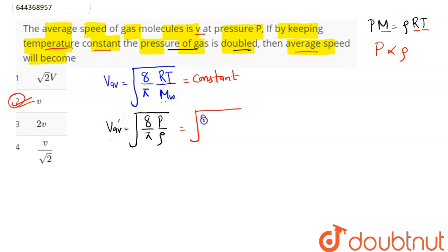2ρ, since pressure is proportional to density. This becomes square root of (8/π) times (2P/2ρ) = square root of (8/π) times (P/ρ), which equals v. So the average speed remains v.